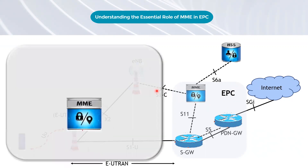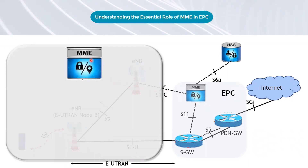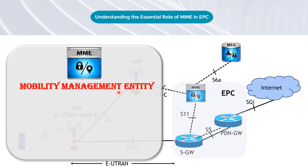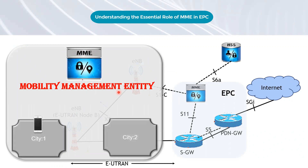At the heart of the EPC is the Mobility Management Entity, or MME. This critical component plays a key role in ensuring that mobile devices can connect to the network and stay connected as they move from one location to another.